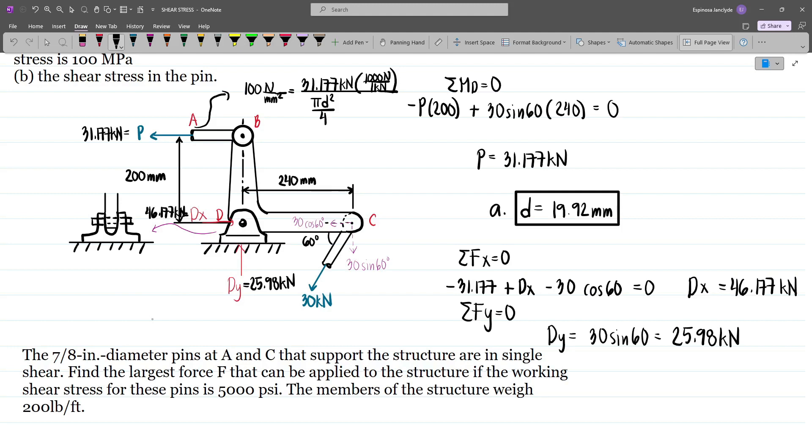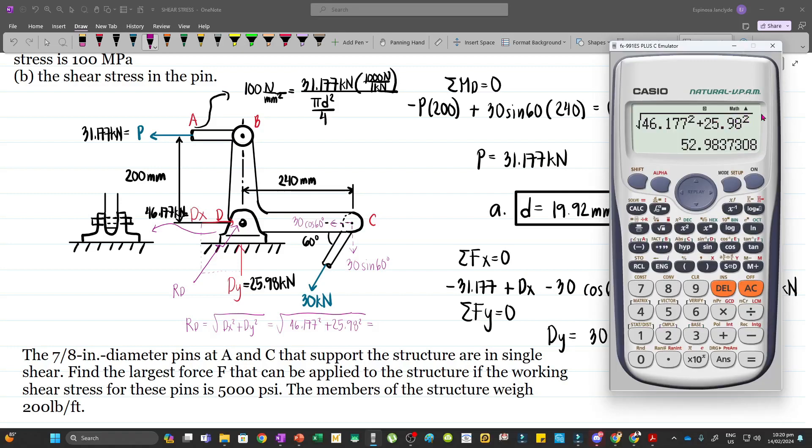We have to remember that in solving for shear stress, we'll actually consider the resultant force of the reactions at D. Let's call this rd. Since this forms a triangle, rd equals the square root of dx² plus dy². That will be 46.177² plus 25.98², which equals 52.98 kN.